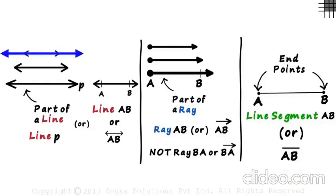A line extends indefinitely in both directions. A ray starts at its endpoint and goes indefinitely in one direction. And a line segment is a fixed part of a line.